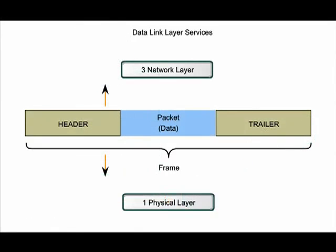The data link layer prepares a network layer packet for transport across the local media by encapsulating it with a header and a trailer to create its own Protocol Data Unit, or PDU. The data link layer PDU is called a frame.